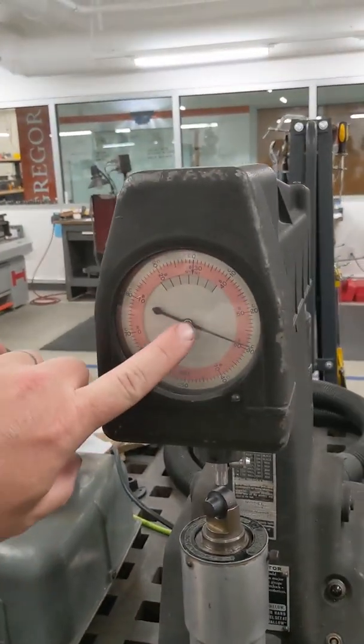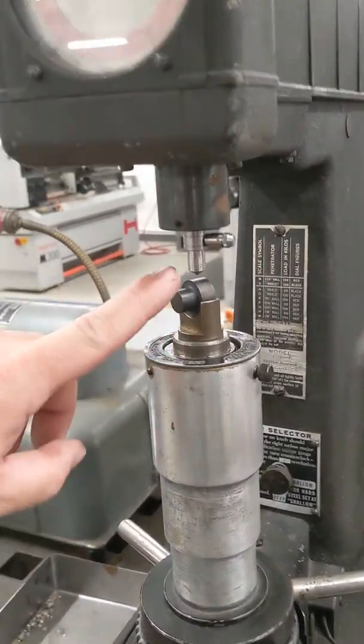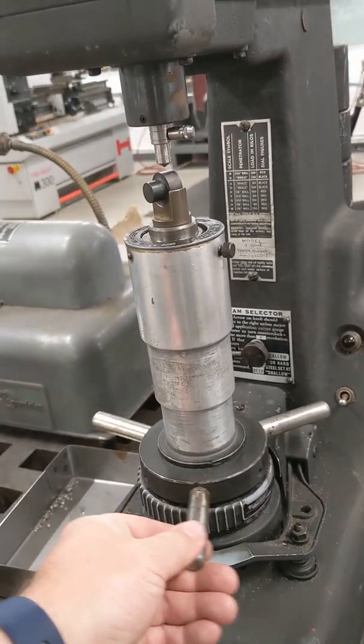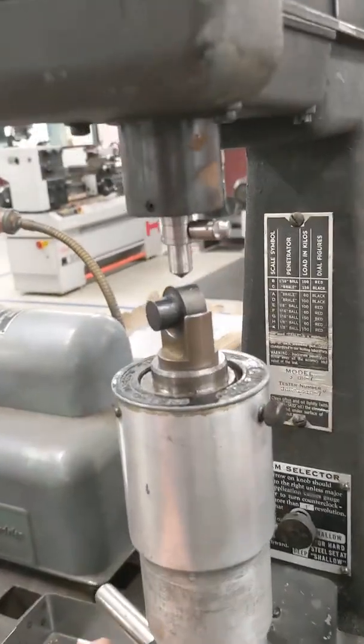The hardness is read off the scale here. In order to move the test sample up and down against the indenter, you rotate this handle at the bottom with the three handles sticking off of it.